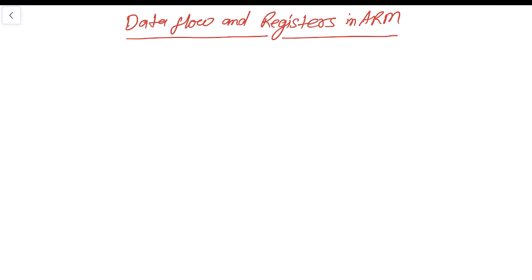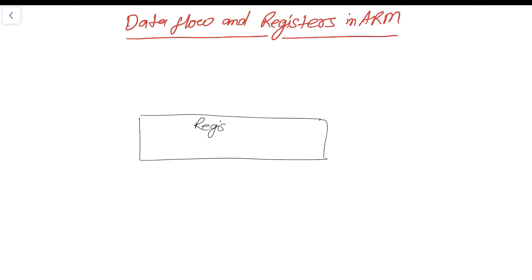Let's first draw the block diagram of the data flow model in our microcontroller. There is a first register bank, which we can call register files. These register files contain a register set from R0 to R15, giving a total of 16 general purpose registers.